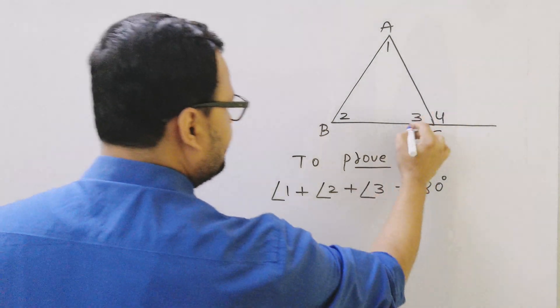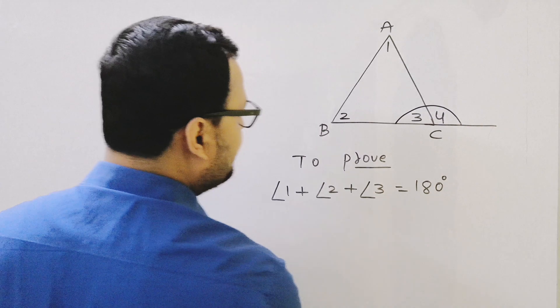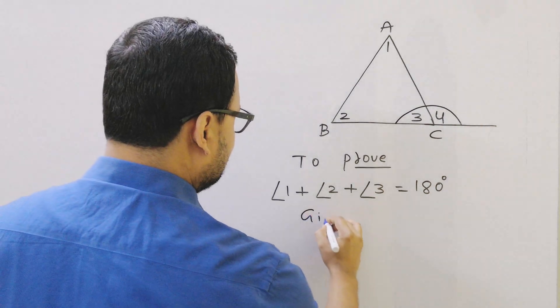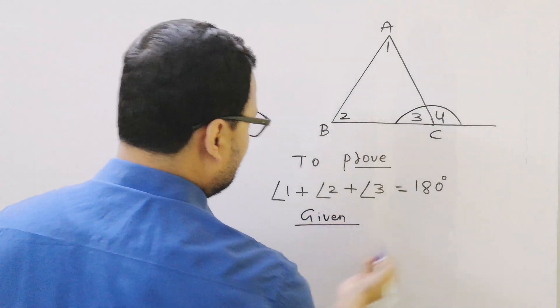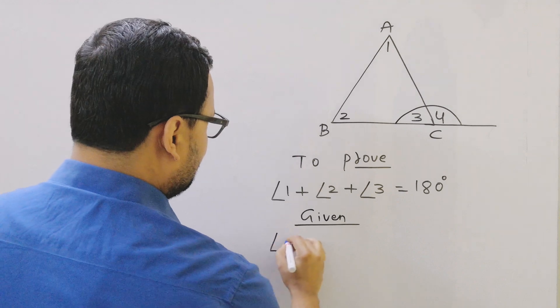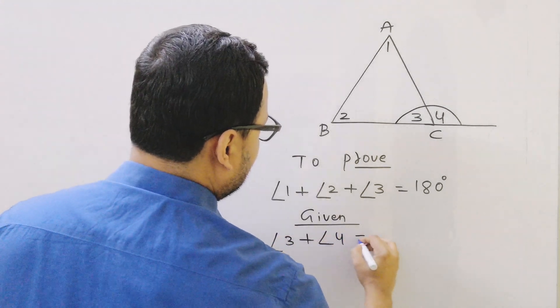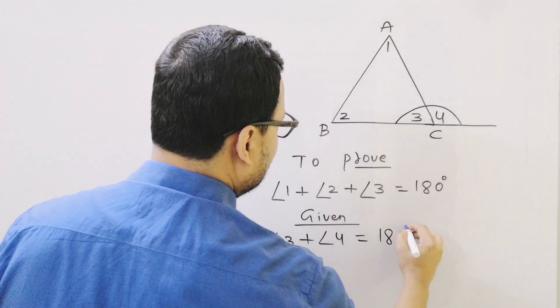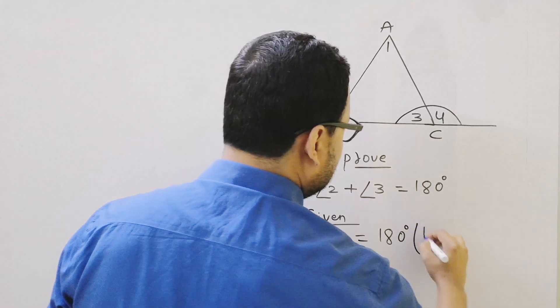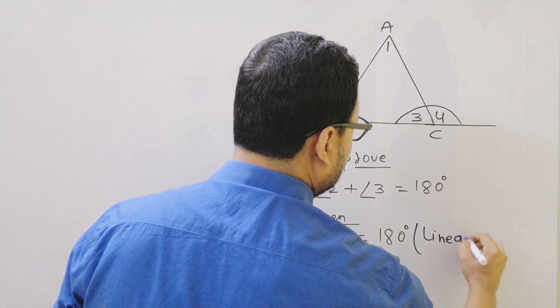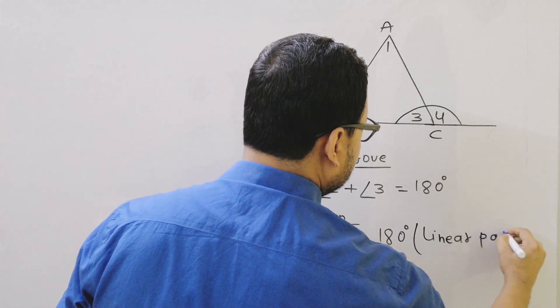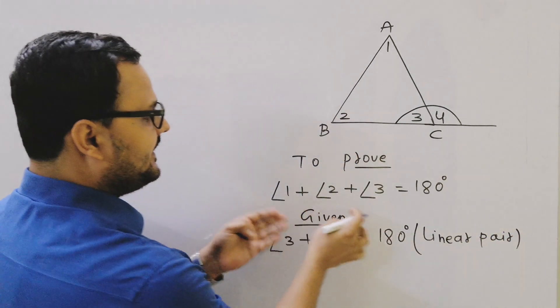So I can write here what is given or what we know: angle 3 plus angle 4 equals 180, and the reason is linear pair. It is not given, but we can write it because we know angle 3 plus angle 4 equals 180 because they are a linear pair.